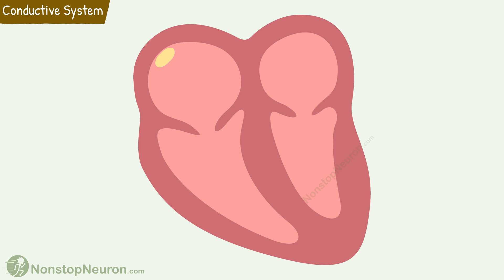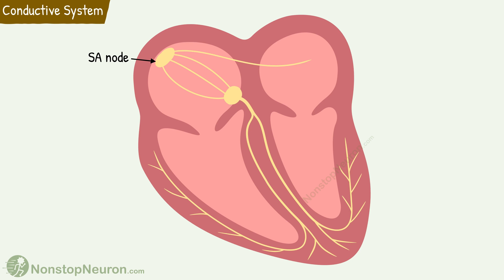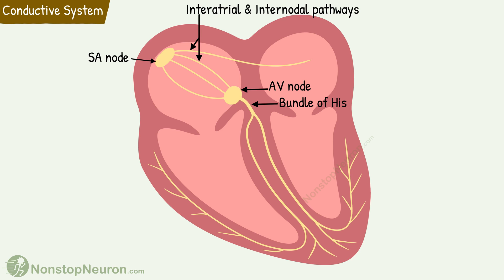As we have already studied in a separate video, the SA node is the normal pacemaker of the heart and it generates impulses. This impulse spreads throughout the heart to trigger synchronized contraction of the atria and ventricles. There is a special conductive system to carry this impulse. It includes internodal and interatrial pathways, AV node, bundle of His, right and left bundle branches, and Purkinje fibers. Now let's study each of them one by one.